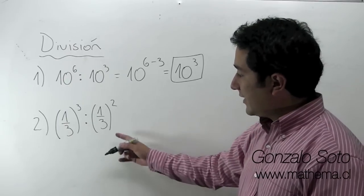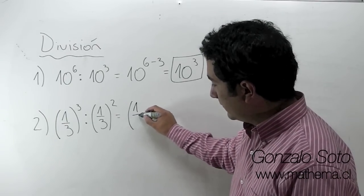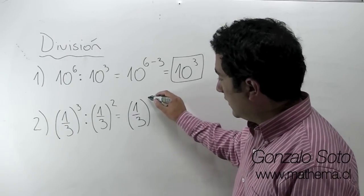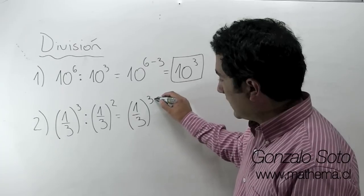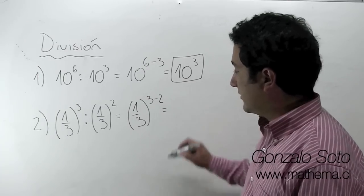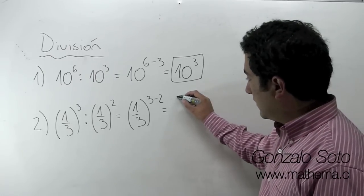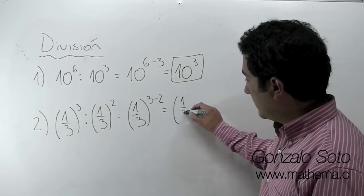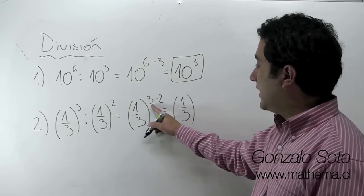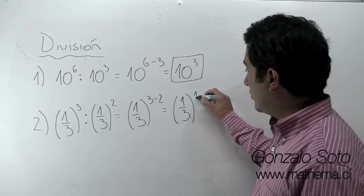En el caso 2, conservamos la base, que es un tercio, y restamos los exponentes. La base es un tercio, 3 menos 2, es 1.